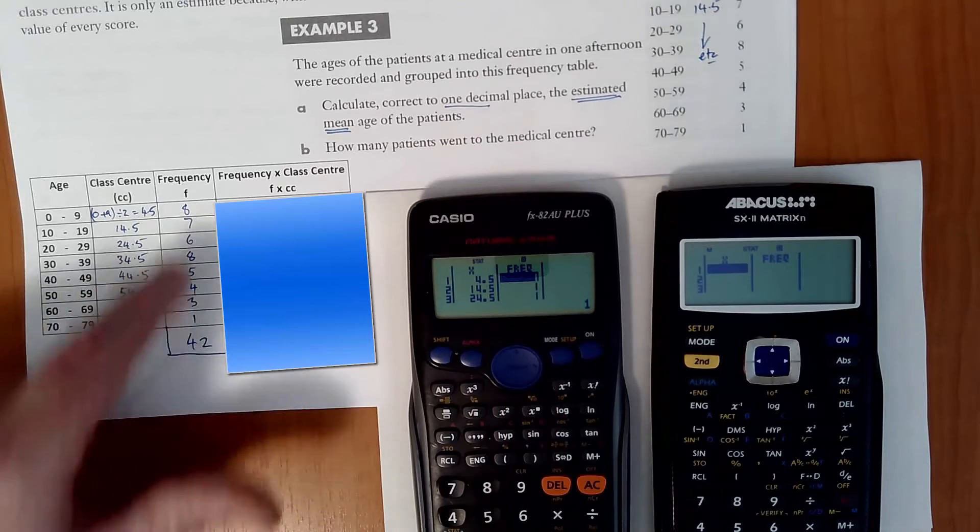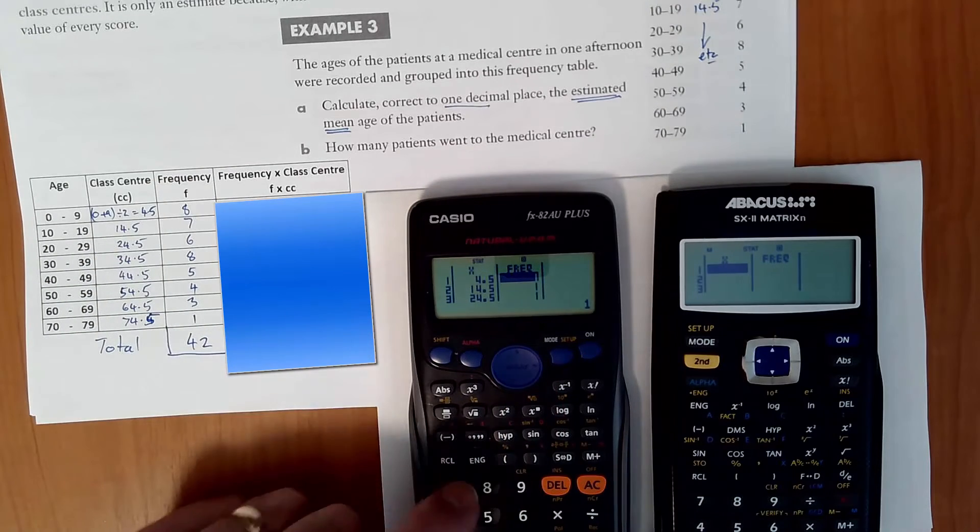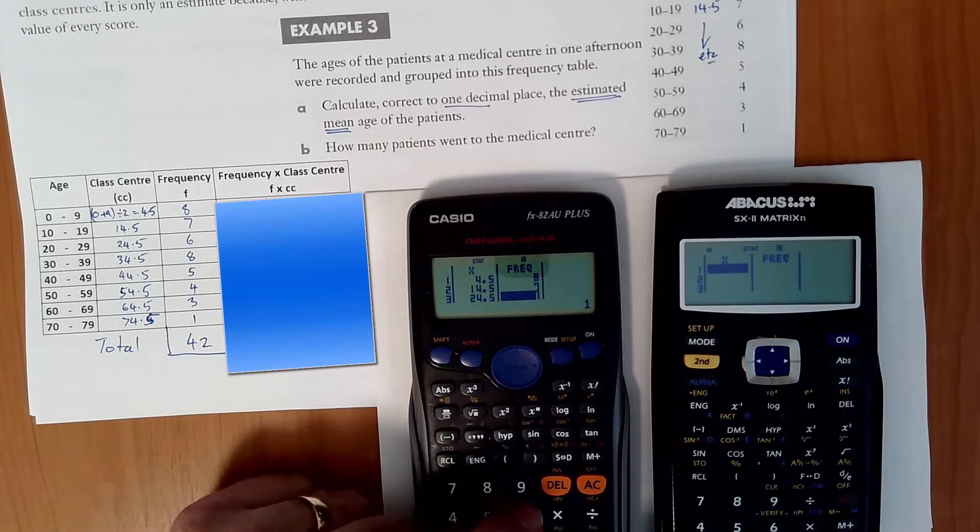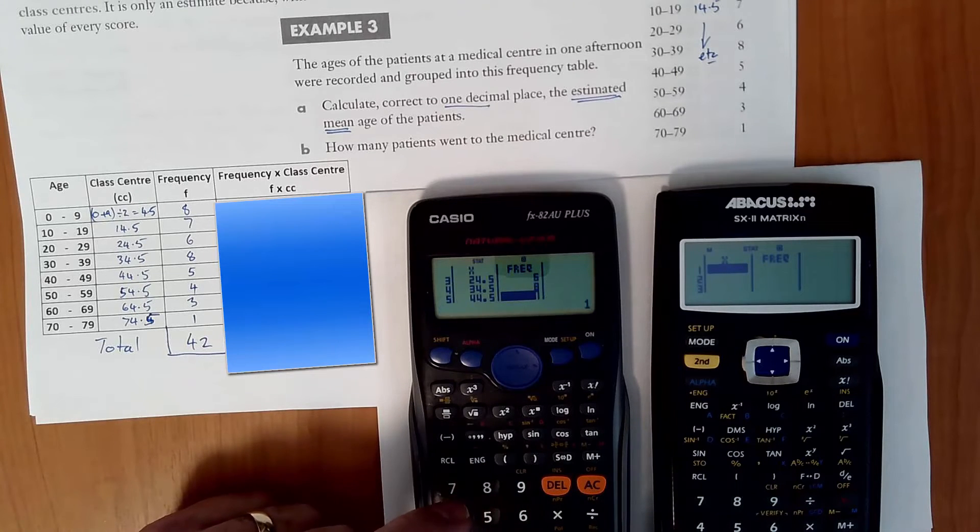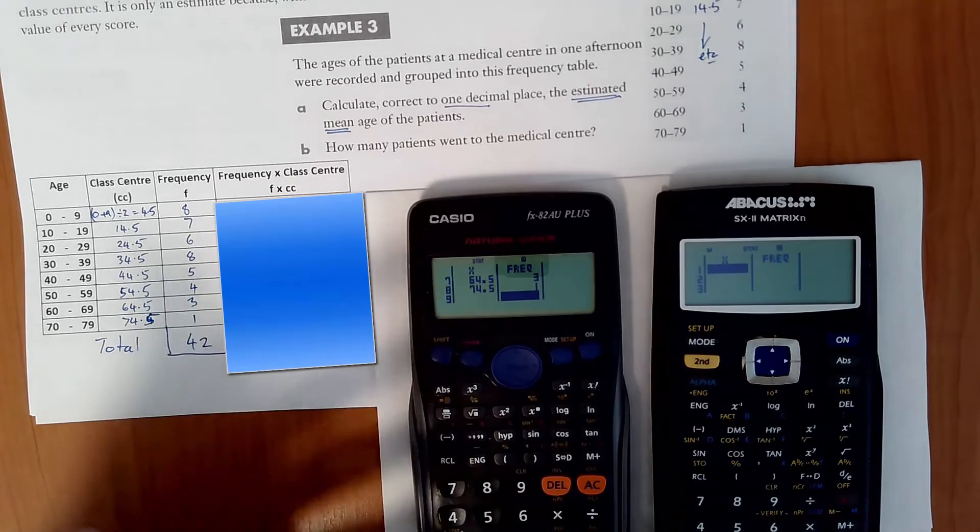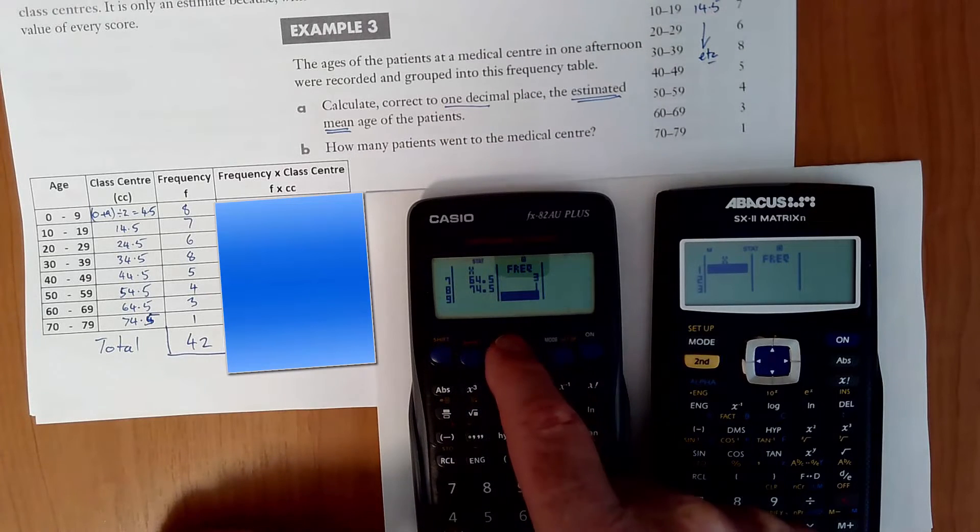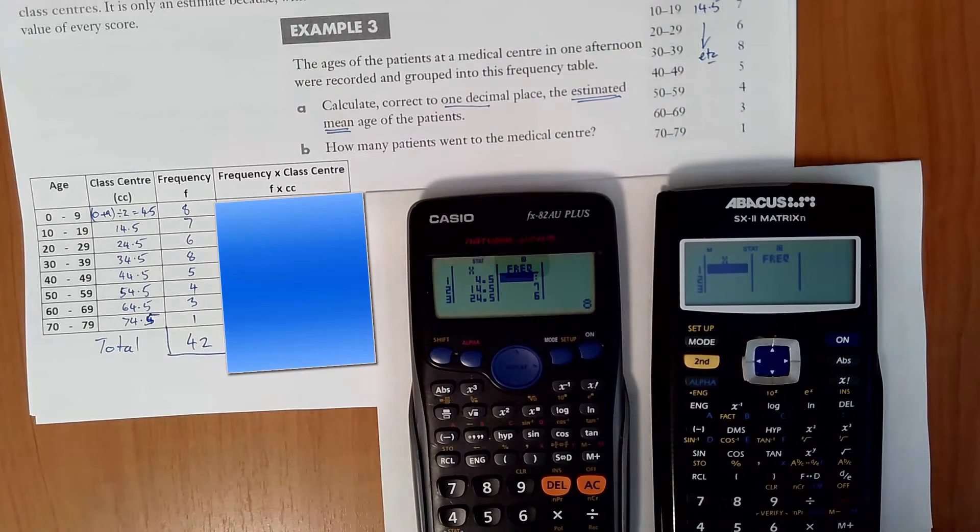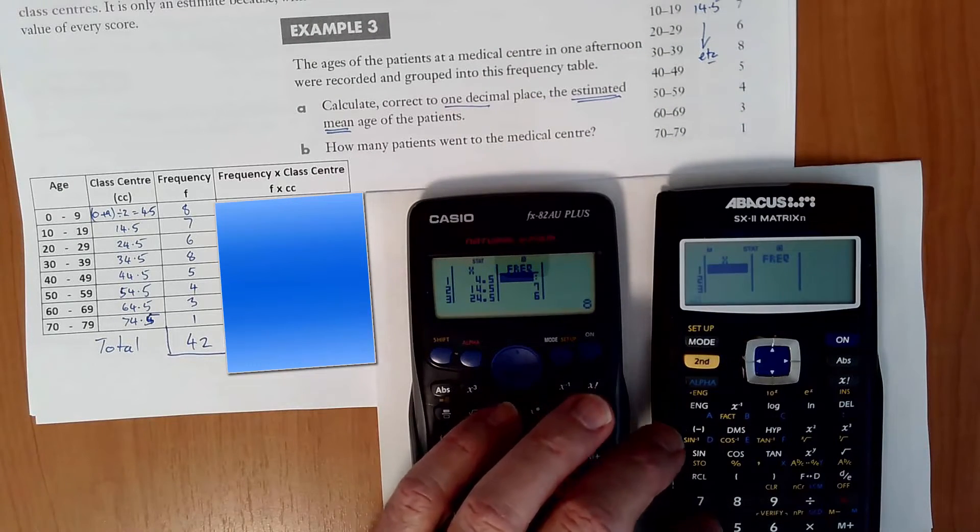Go across to the frequency columns and enter the frequency data. 8 equals 7 equals 6 equals 8 equals 5 equals 4 equals 3 equals 1 equals. And then we're finished. Scroll back up to the top to double check that it's okay. Now I'll quickly do it on this calculator as well. Exactly the same method.